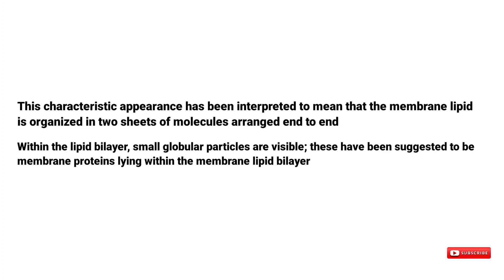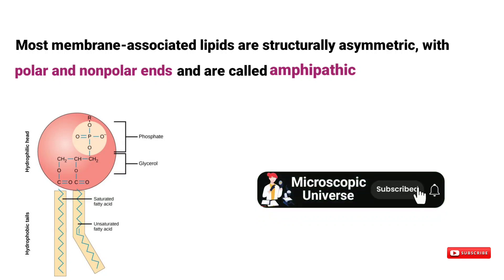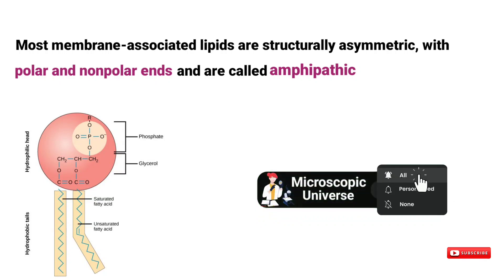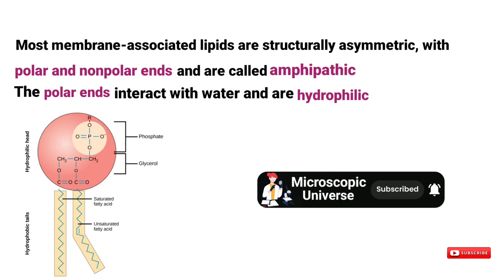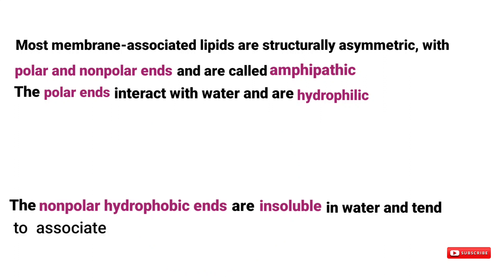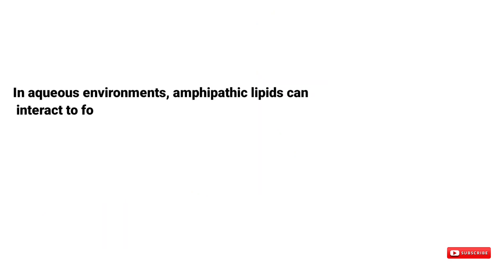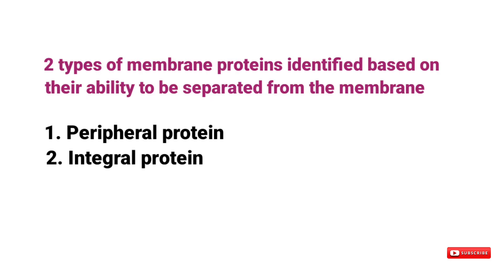The chemical nature of membrane lipids is critical to their ability to form bilayers. Most membrane-associated lipids are structurally asymmetric with polar and non-polar ends and are called amphipathic. The polar ends interact with water and are hydrophilic; the non-polar hydrophobic ends are insoluble in water and tend to associate with one another. In aqueous environments, amphipathic lipids can interact to form a bilayer.